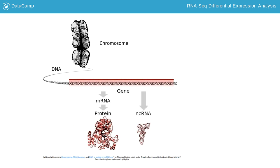Within this sequence are regions called genes. Genes provide instructions to make proteins, which perform some function within the cell. To make proteins, the DNA is transcribed into messenger RNA, or mRNA, which is translated by the ribosome into protein.